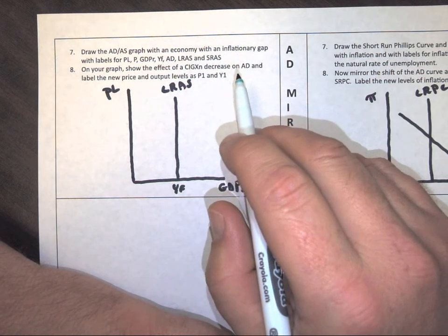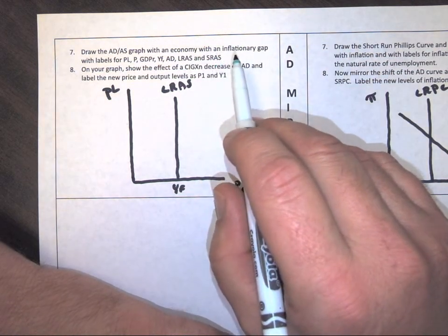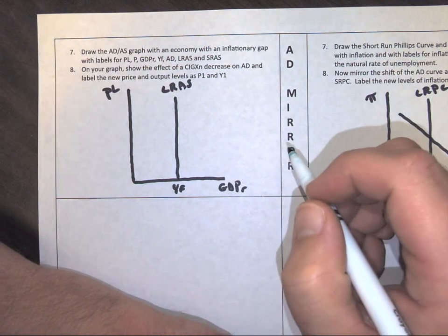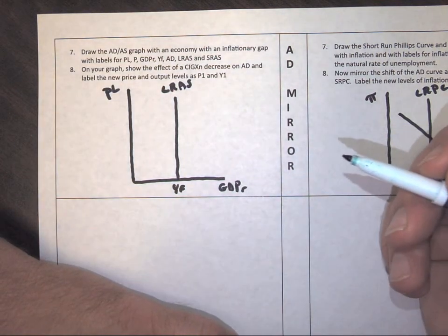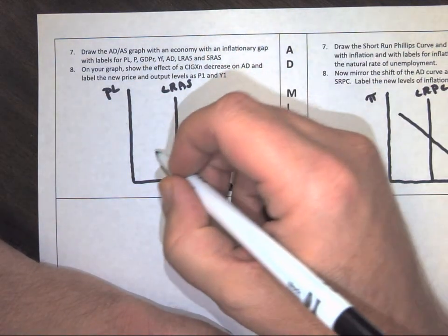So now we're going to be drawing an economy with an inflationary gap. If we have an inflationary gap, that means we're producing too much, overusing resources.